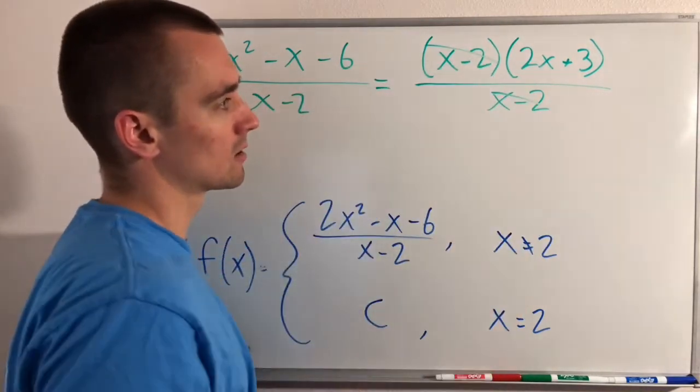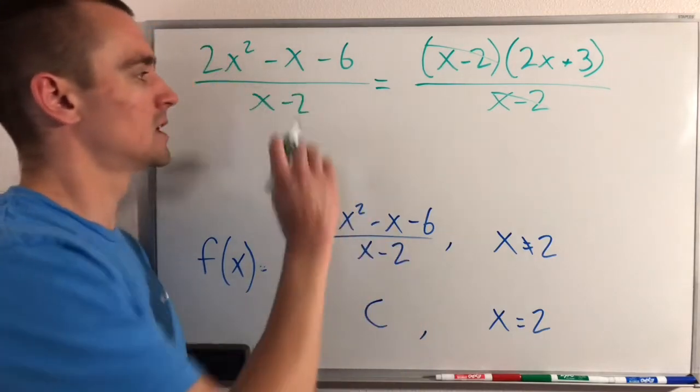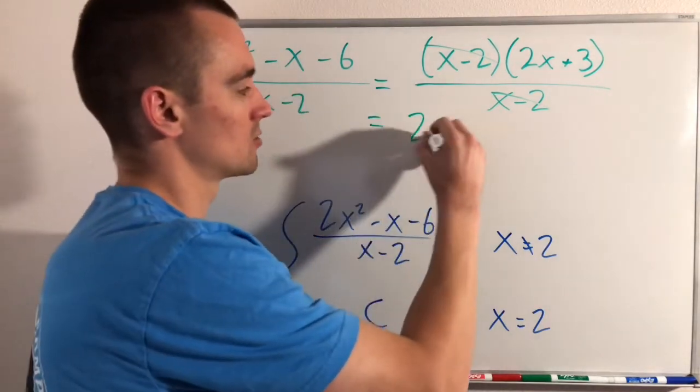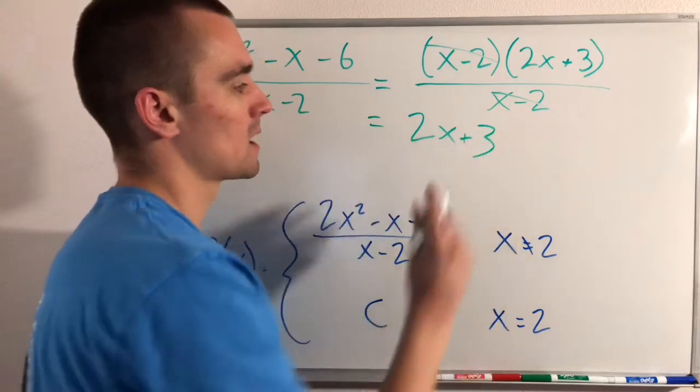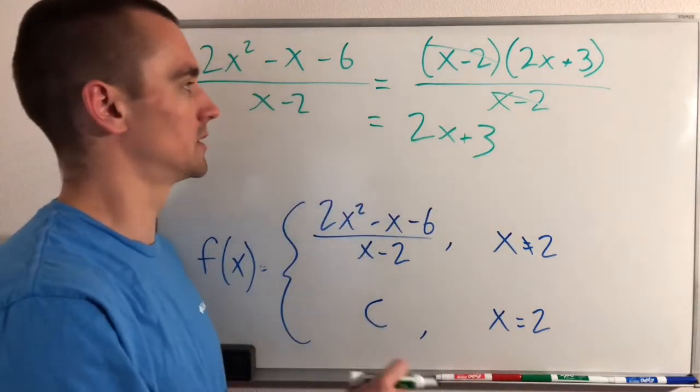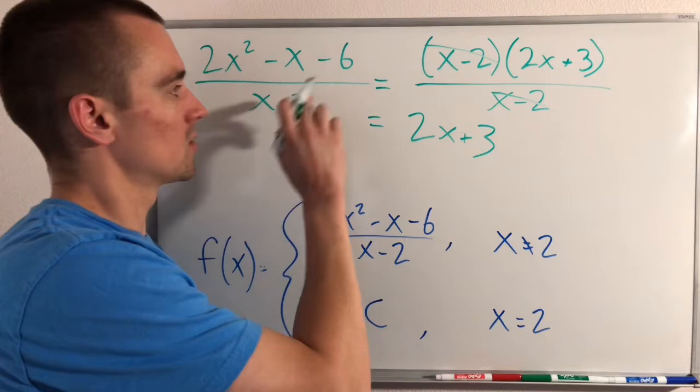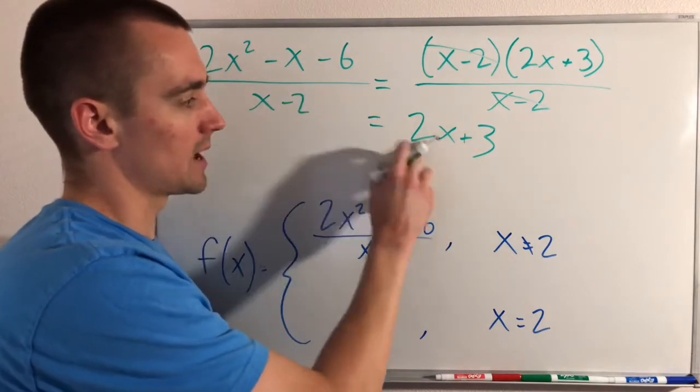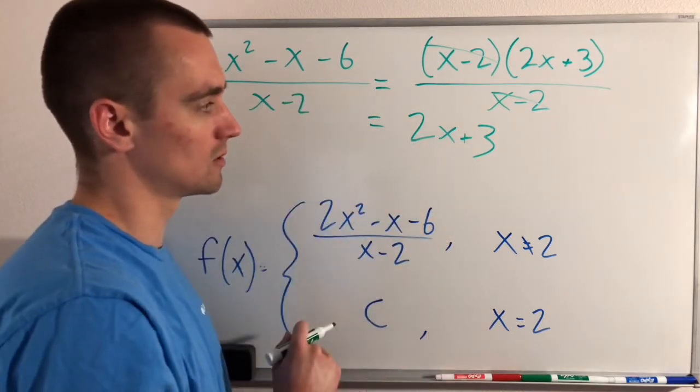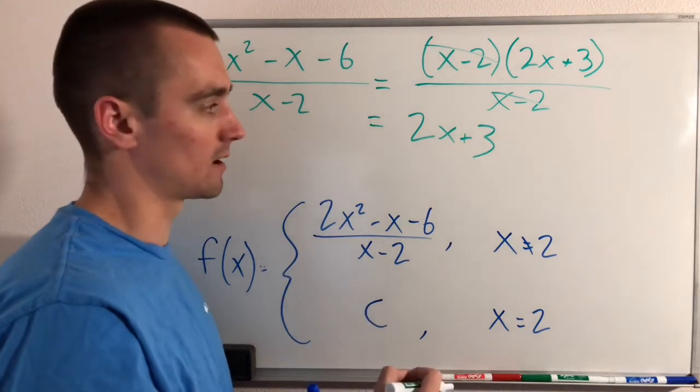So these will actually cancel out. So this fraction is actually equivalent to 2x plus 3, except the issue is it's not defined when x equals 2. So these are the same, except when x equals 2, there's actually going to be a hole in that function.